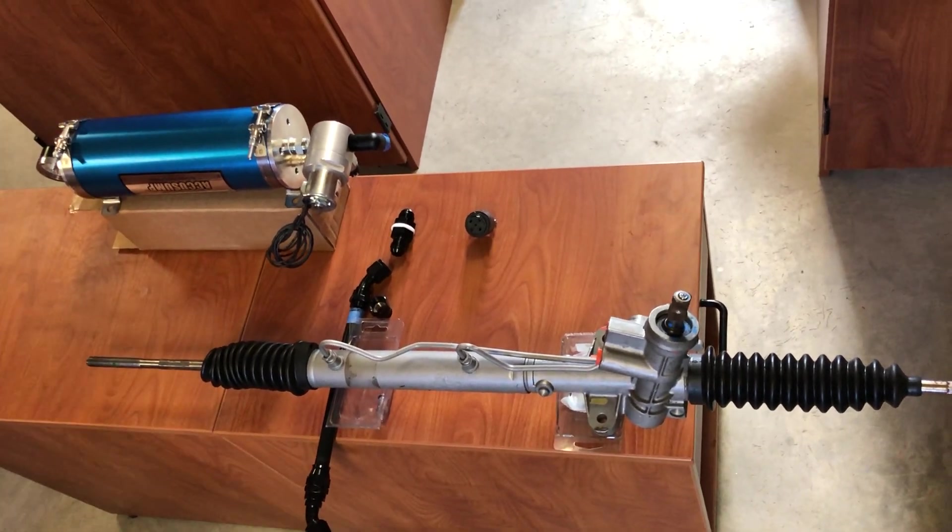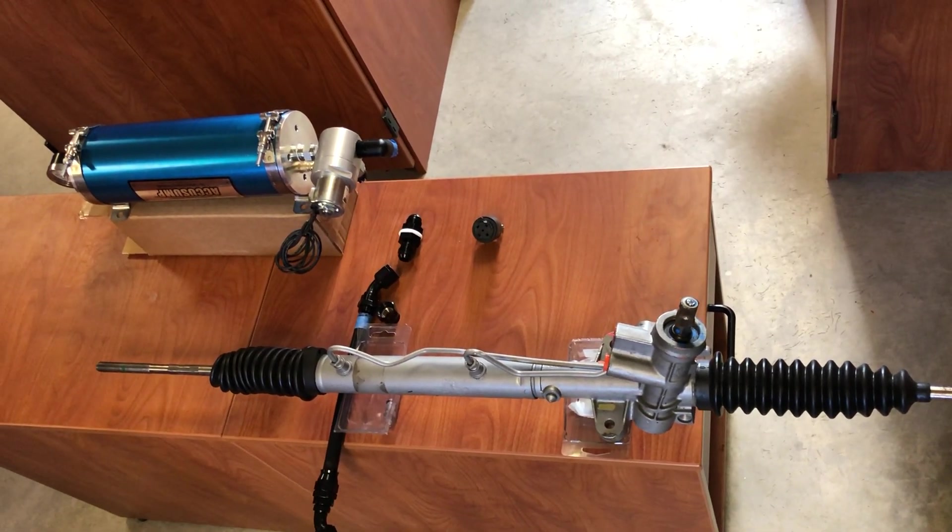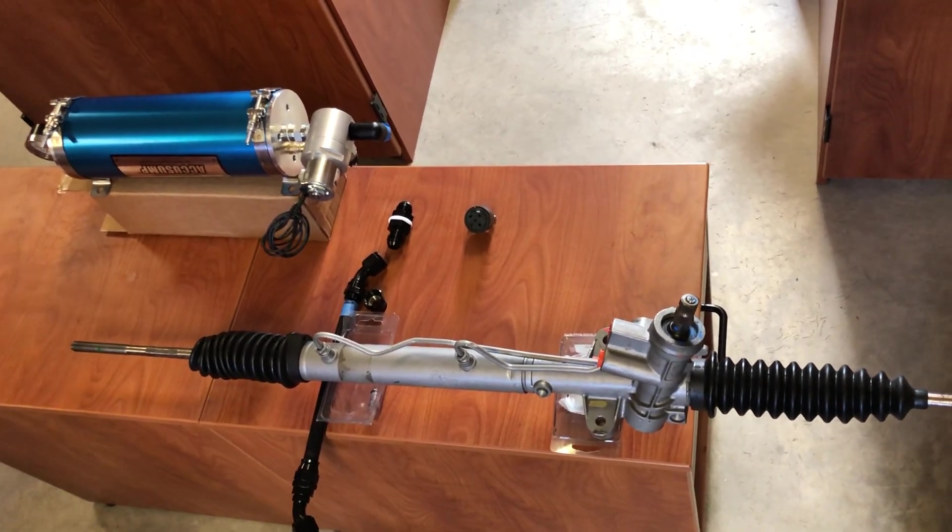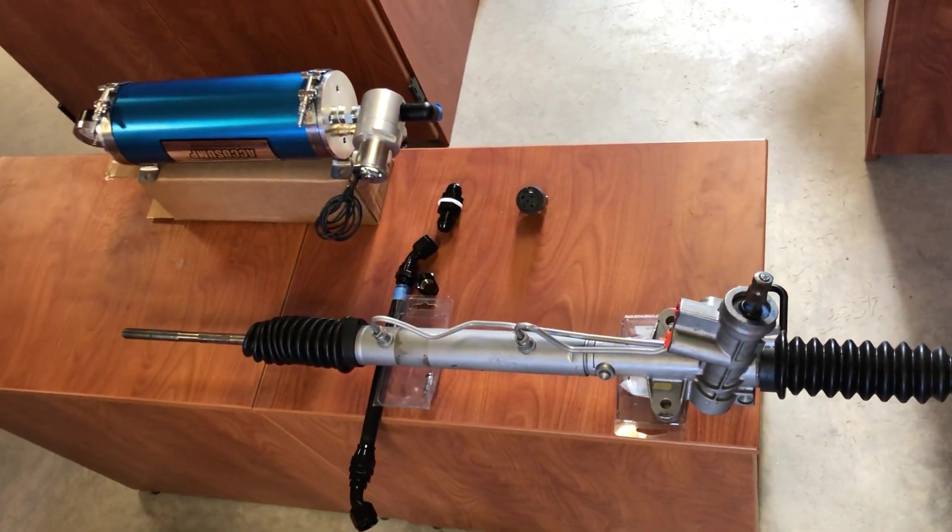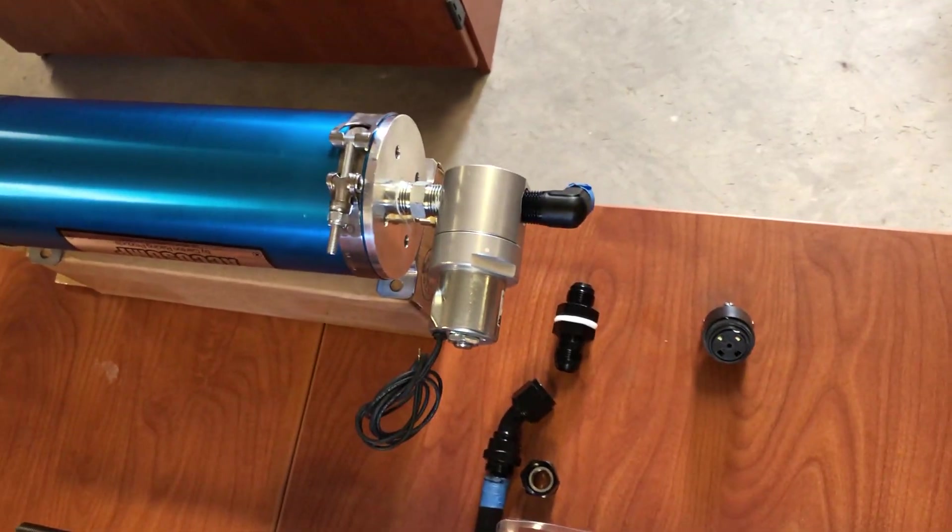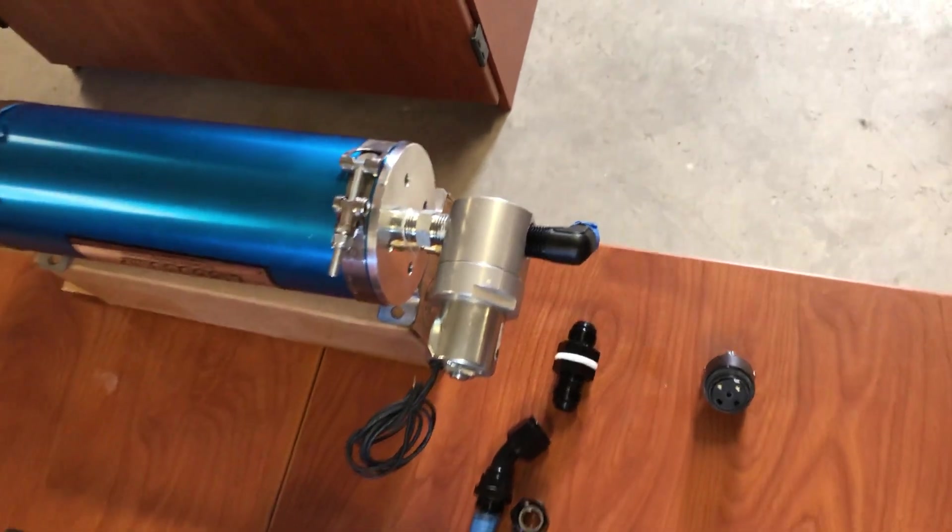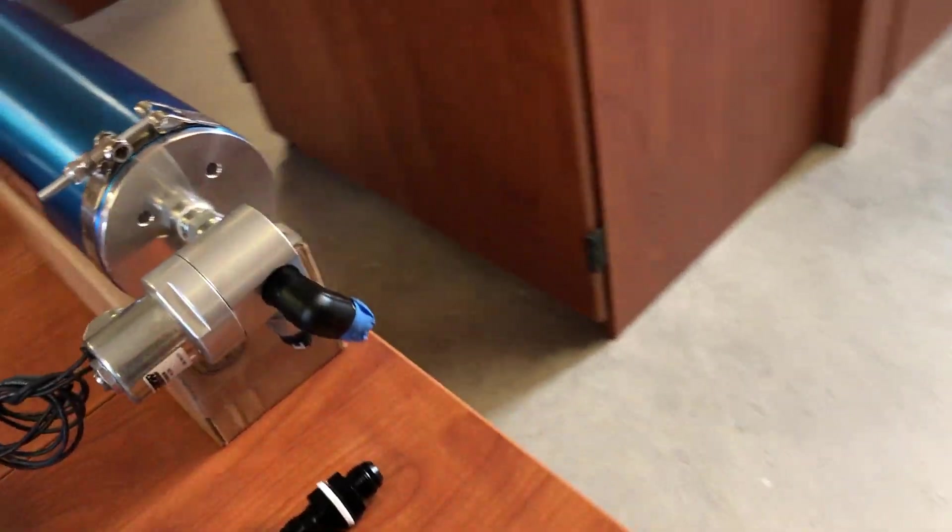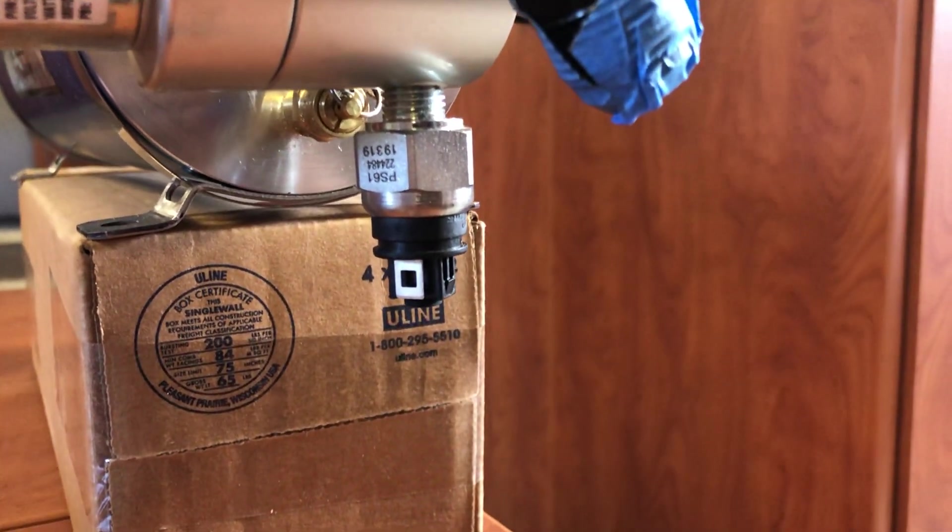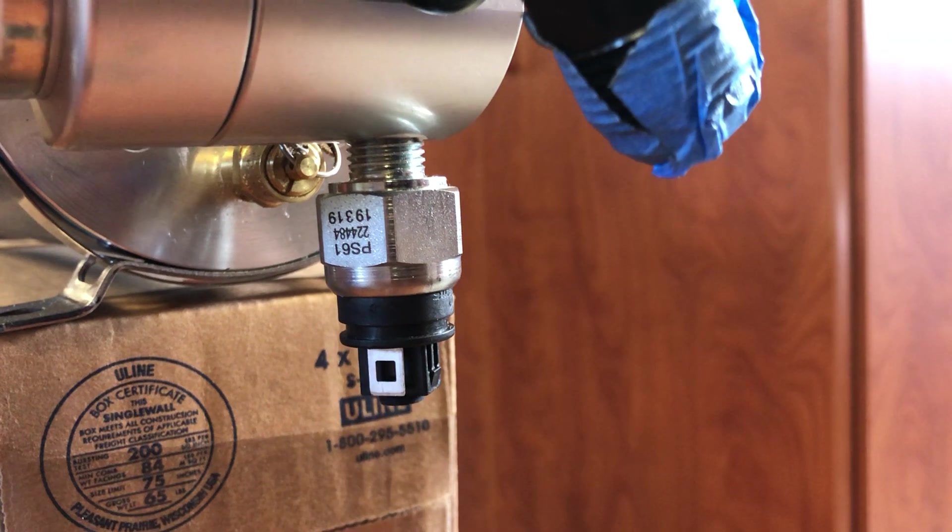So this here is basically an accumulator. It stores pressurized oil from the oil system and you can either run a manual or an electric valve to release the oil pressure. I ran the 25 psi switch, so it kicks on at 25 psi.